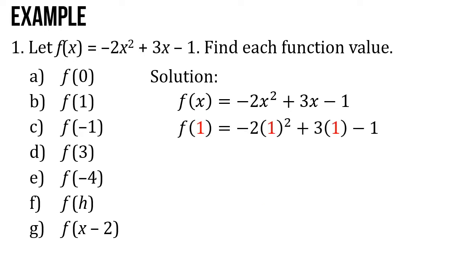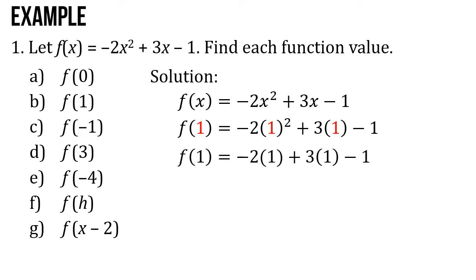For letter B, what if x is equal to 1? So f of 1 equals negative 2 times 1 squared plus 3 times 1 minus 1. It will become f of 1 equals negative 2 times 1 plus 3 times 1 minus 1. f of 1 equals negative 2 plus 3 minus 1.